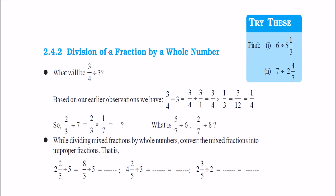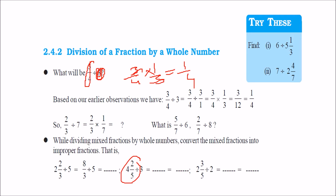For division of a fraction by a whole number, the same rule applies. When you divide 3 by 4 by 2, you write 3 by 4 into the reciprocal of 2, which is 1 by 2, giving 1 by 4 (wait — 3 by 4 into 1 by 2 gives 3 by 8, but let's follow the method). For 4 and 2 by 5 divided by 3: first convert 4 and 2 by 5 to improper: 5 fours are 20, plus 2 is 22 by 5. Then 22 by 5 divided by 3 means multiply by 1 by 3, giving 22 by 15.